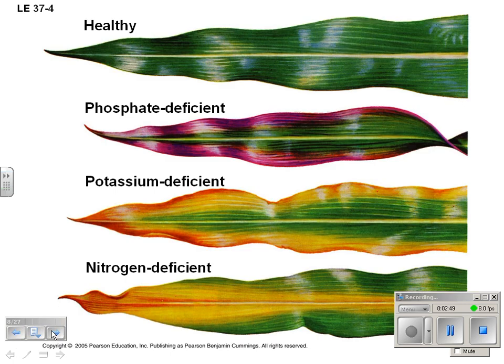Here's a quick example of three different plants. Deficiency in certain minerals can be seen in their leaves — in this corn. A nitrogen-deficient corn, potassium-deficient corn, phosphate-deficient corn, and then healthy corn.